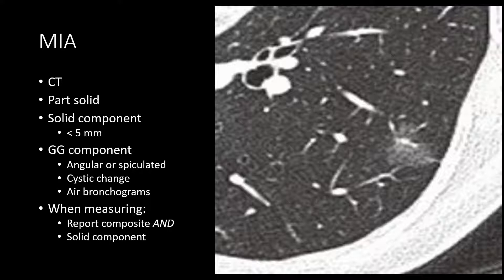When reporting these lesions, you want to report both the composite size — the largest dimension of the total lesion — as well as the solid component. The right-hand image shows a part-solid nodule with the ground glass component demonstrating small intermixed cystic lucencies, angular margins with pleural tagging, and a thin centrally oriented solid component. This represented a minimally invasive adenocarcinoma.